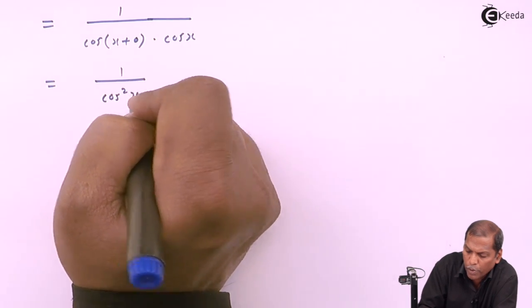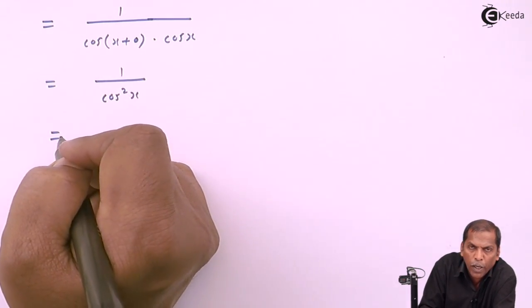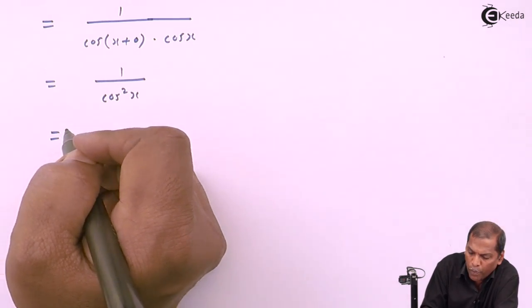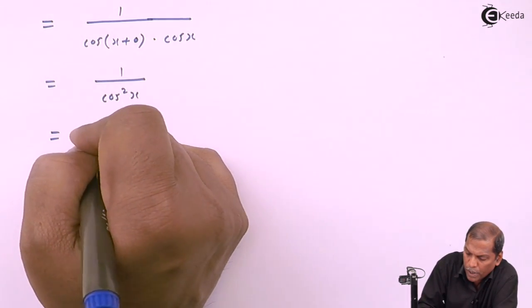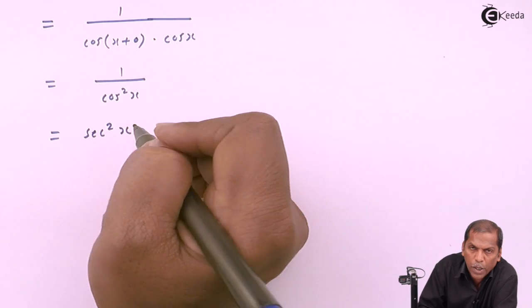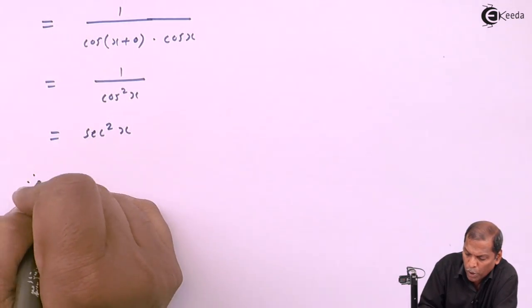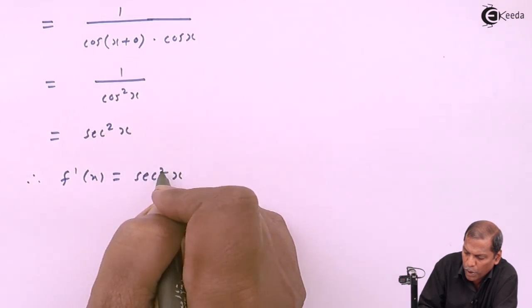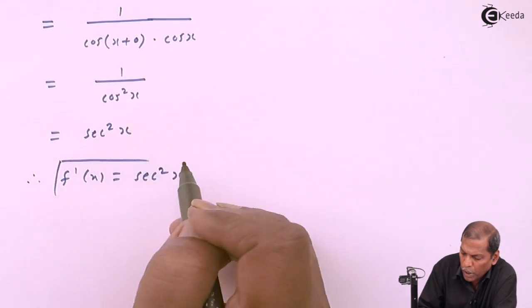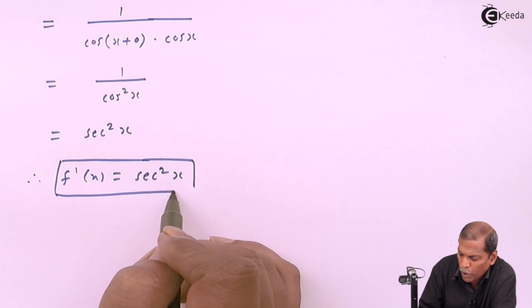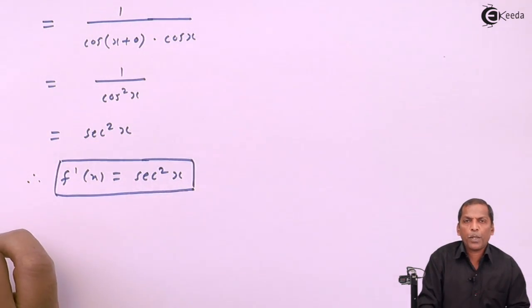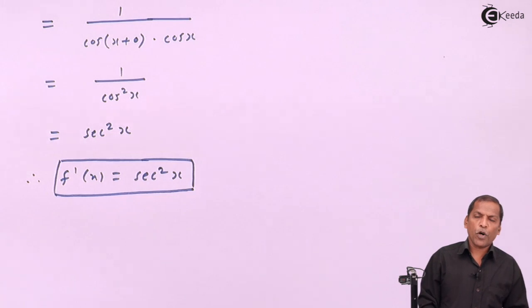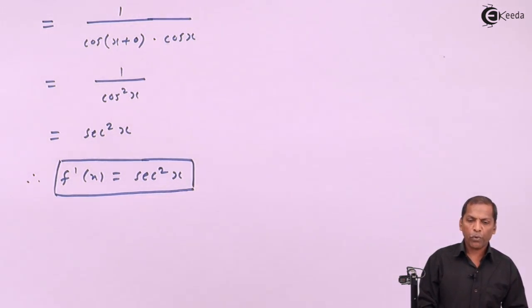So that gives 1 upon cos²(x). Using the trigonometric identity, 1/cos(θ) = sec(θ), therefore 1/cos²(x) = sec²(x). In this way we prove that f'(x) = sec²(x). It means the derivative of tan(x) is sec²(x). This is the required solution for the given function f(x). Thank you.